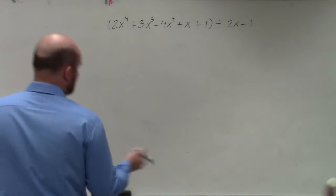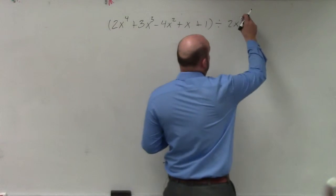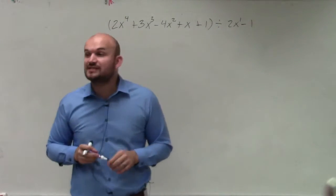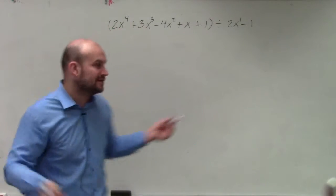So to do this problem again, just like we did before, we want to look at our divisor and make sure our divisor is linear. In this case, our divisor is linear. So since our divisor is linear, we can just set it equal to 0 and find the 0.